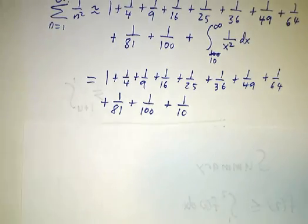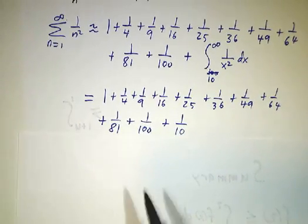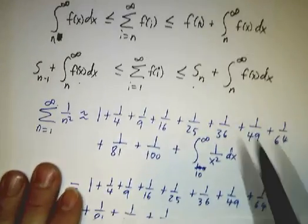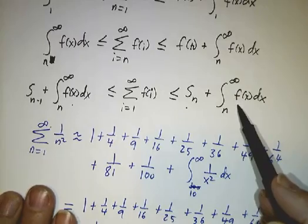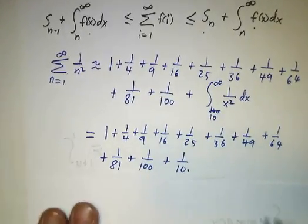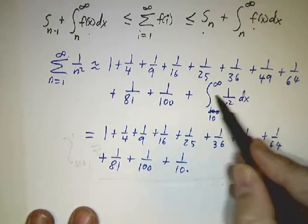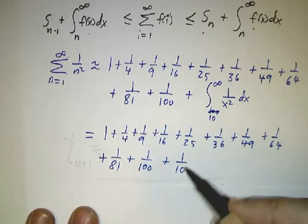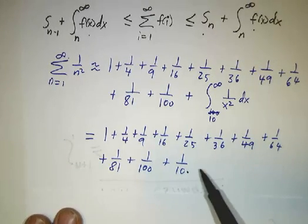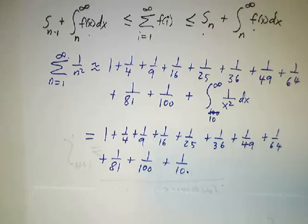And so we know that the sum as n goes from 1 to infinity of 1 over n squared is roughly this. Now, actually I used this expression, so the actual sum is slightly less than this. If we had done the integral from 11 to infinity, that would have been a 1 eleventh. We would have gotten something that's a little bit more than the actual value. So this doesn't give you the exact value, but it gives you very close. And in fact, this would give you the value to two decimal places.